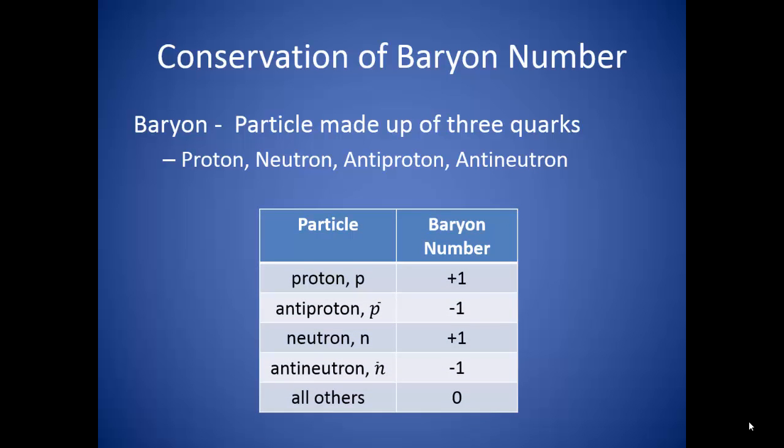Protons and neutrons get a baryon number of positive one. Their antiparticles, antiprotons and antineutrons, get a baryon number of negative one. All other particles, including electrons and positrons, get a baryon number of zero.